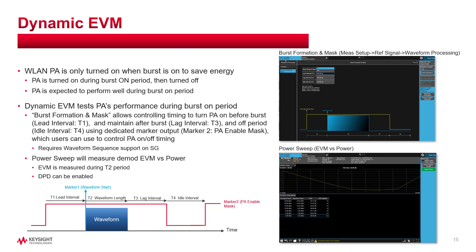Dynamic EVM is similar to a standard EVM measurement for a power amplifier. It is typically used for burst signals with the assumption that the DC power to the PA is turned on shortly before the beginning of the burst and then turned off shortly after the end of the burst. The key to the measurement is to understand the impact on EVM when the DC power of the PA is turned on and off.